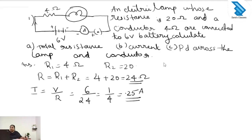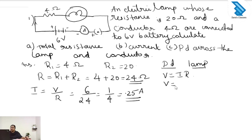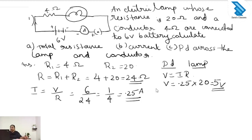Next we have to find the potential difference across the lamp. The equation for potential difference is V is equal to I into R. Here I is 0.25 and the resistance of the lamp is 20, so the answer is 5 volt.